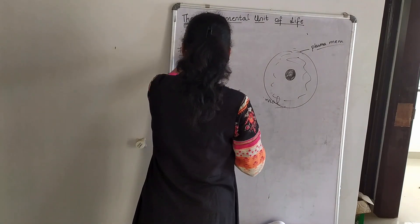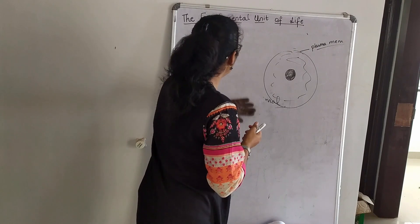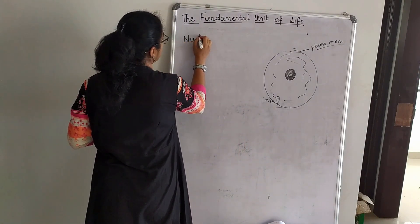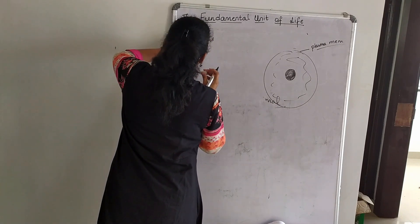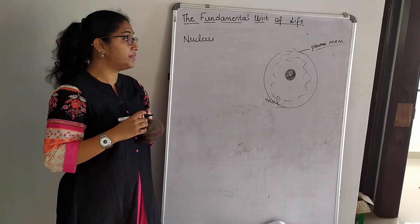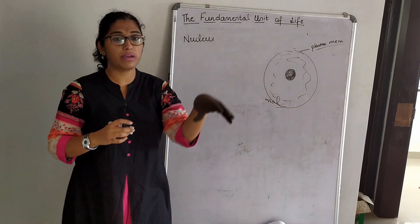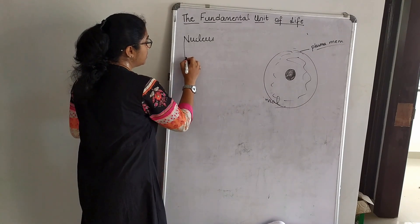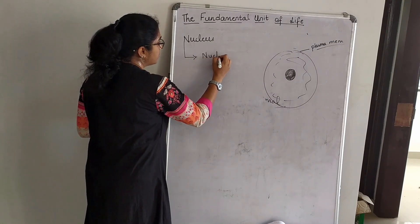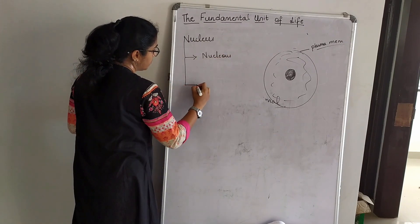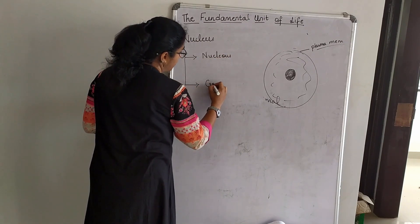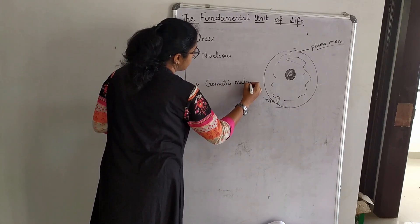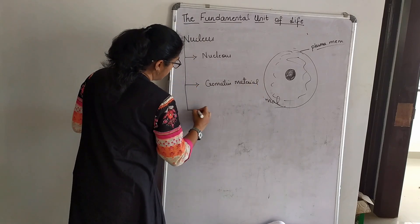Next we will go on to the nucleus — the second major component of a cell. Nucleus is known as the headquarter of the cell. Nucleus consists of nucleolus, chromatin material, and chromosomes.